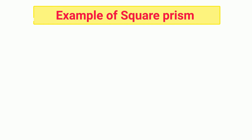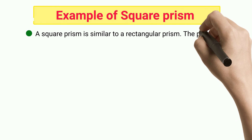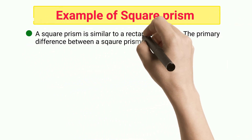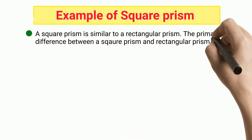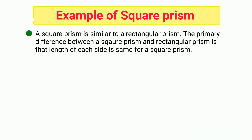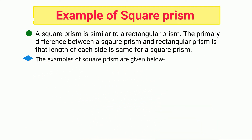Example of square prism: a square prism is similar to a rectangular prism. The primary difference is that the length of each side is the same for a square prism. The examples of square prism are given below.